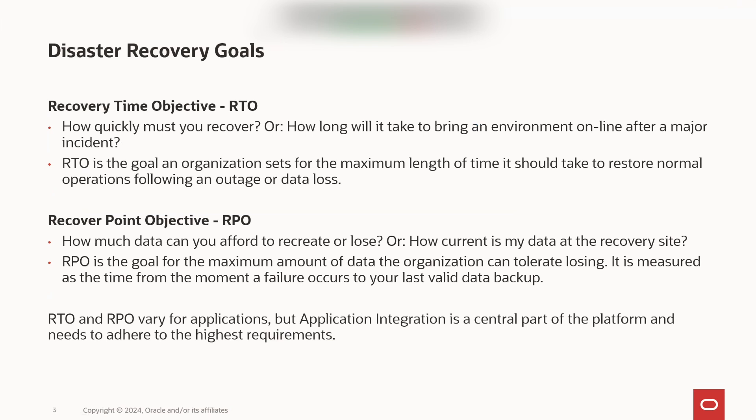Disaster recovery goals are, on one side, recovery time objective (RTO), which means the time to recover — how quickly must you recover. The organization sets a goal for the maximum length of time it should take to restore normal operations. The other objective is recovery point objective (RPO): at what point in time was the data still available, meaning how much data can you afford to recreate or lose because you had backed up several hours or a day ago.